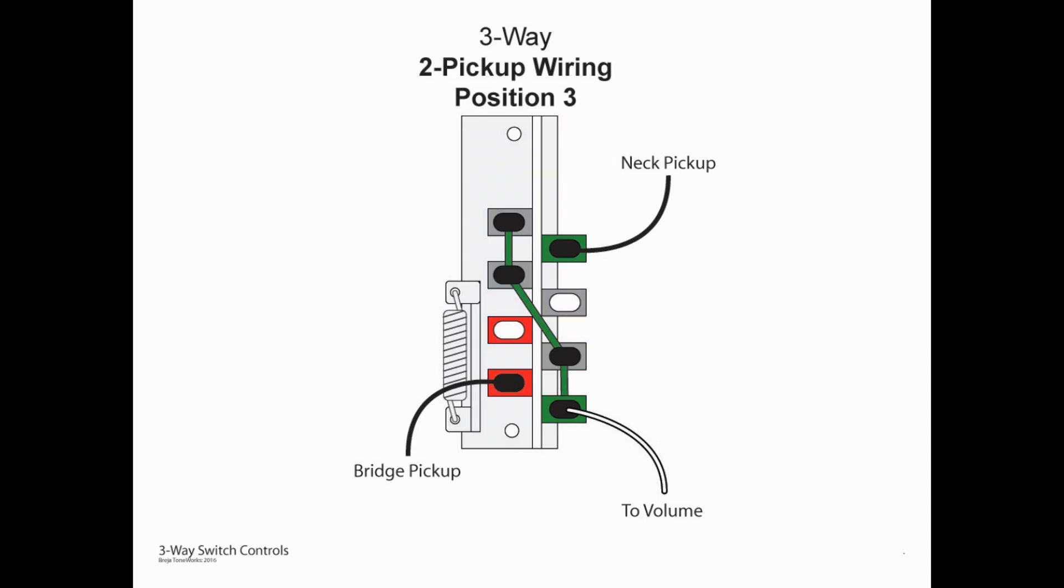And lastly in position three which would be the neck only, on the left hand side you can see the bridge pickup is still coming into A4 but it's linked to A3 which is not part of the jumper scheme so it's not getting out to our volume pot. On the right side the neck pickup coming into B1 is connected to B4 which is right away connected to our volume pot, so that's how the bridge pickup is segmented off and it is not active in position number three.